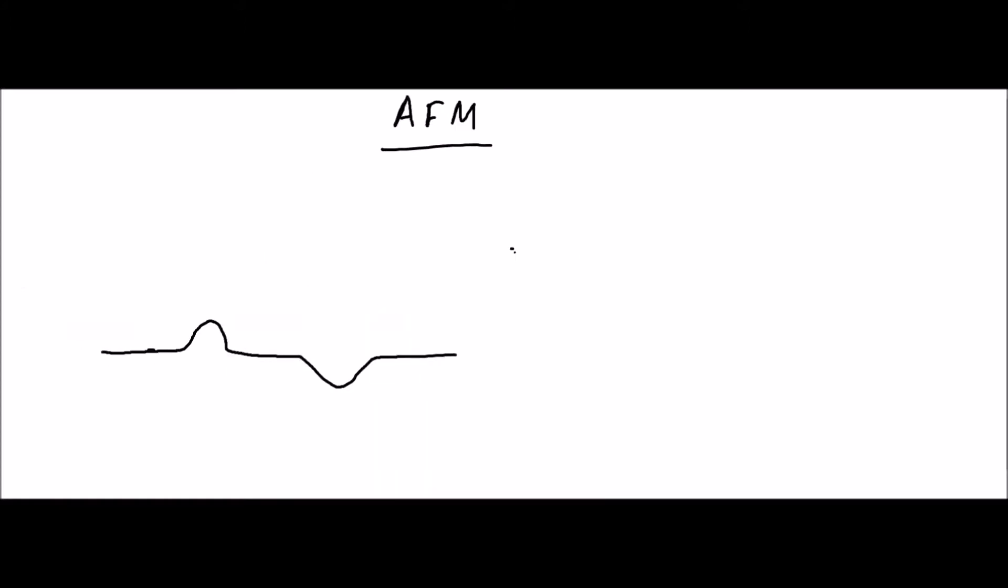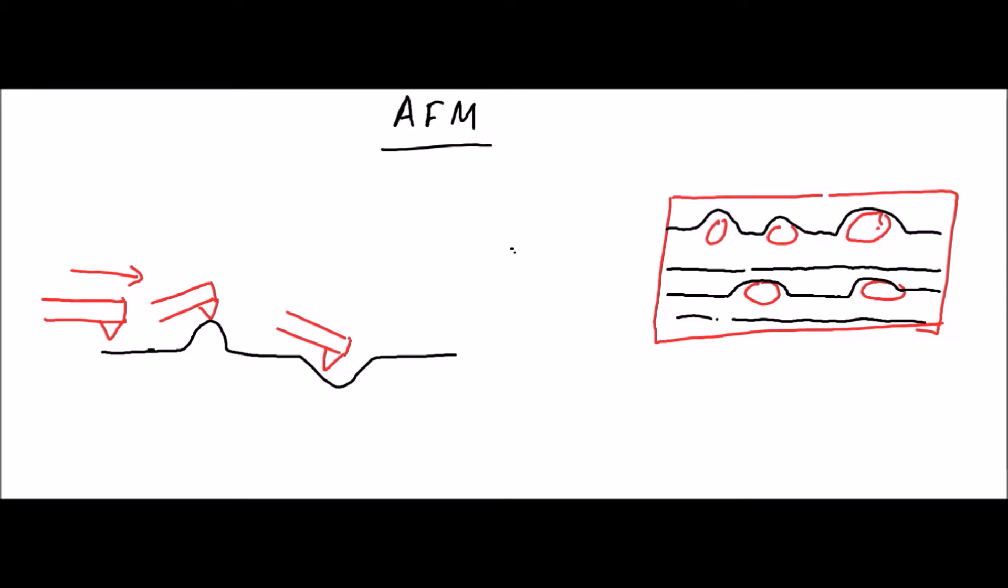The tip-sample interaction in the ups and downs of the surface drives the cantilever into oscillation. The tip is raster scanned through the sample and the height of the tip along with the position of the surface is recorded. The resulting map gives the surface topography.